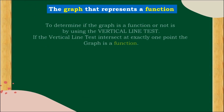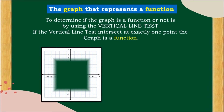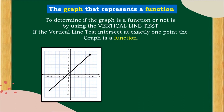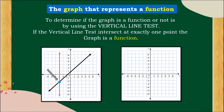The graph that represents a function: to determine if a graph is a function or not, use the vertical line test. If the vertical line intersects at exactly one point, the graph is a function. The first graph is a line; when we draw a vertical line intersecting the graph, it intersects at exactly one point — this is a function. The second graph also has the vertical line intersecting at exactly one point — so this is also a function.